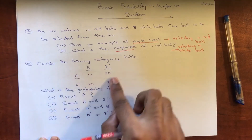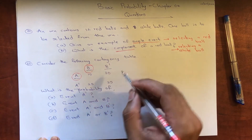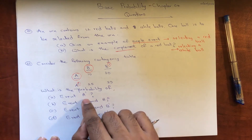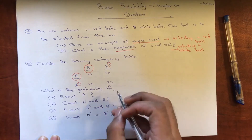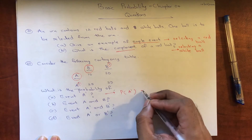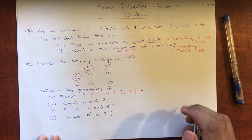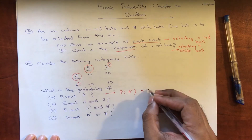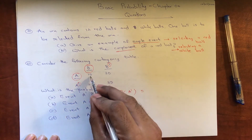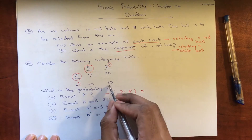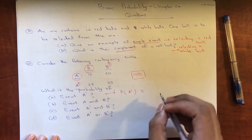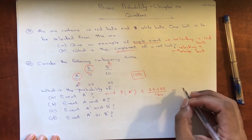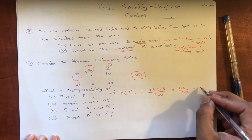Now let's move to question 2. They give you a table with two events A and B and their complements. The first question asks for the probability of the complement of A. The figures 25 and 35 are associated with the complement of A. The total adds up to 100, so 25 plus 35 divided by 100 gives 60 over 100, which is 0.6.